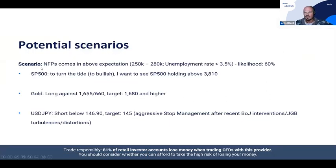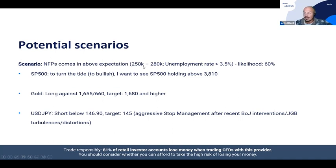I have scenarios: numbers come out higher than expected, as expected, below expectation — and then I formulate a thesis. NFPs came in above expectation; 200,000 was expected, now it's 261K — within the range of 250-280 I pointed out. Unemployment rate greater than 3.5 — in fact 3.7. Likelihood 60%. I have S&P 500, gold, and dollar-JPY. I formulate what I want to see, what I need to see to feel confident.